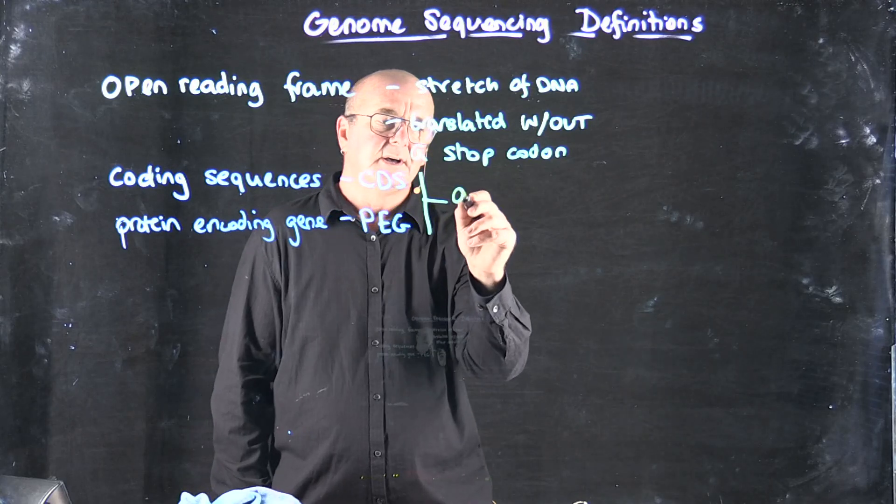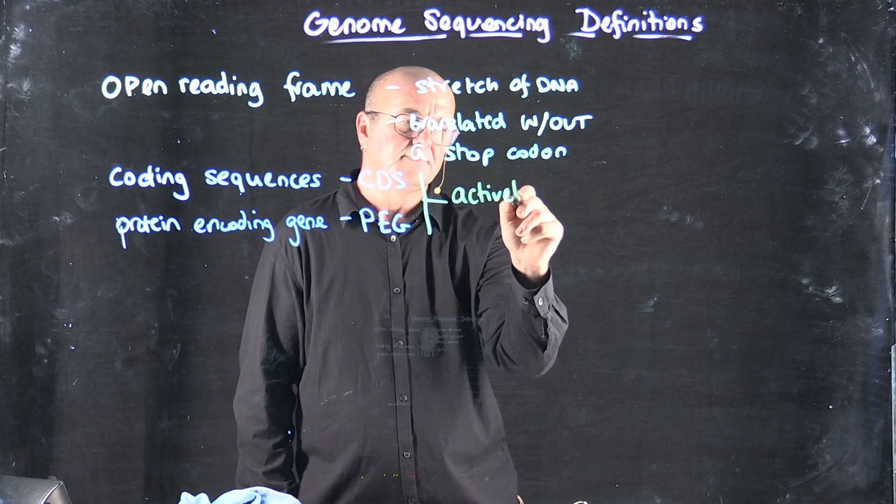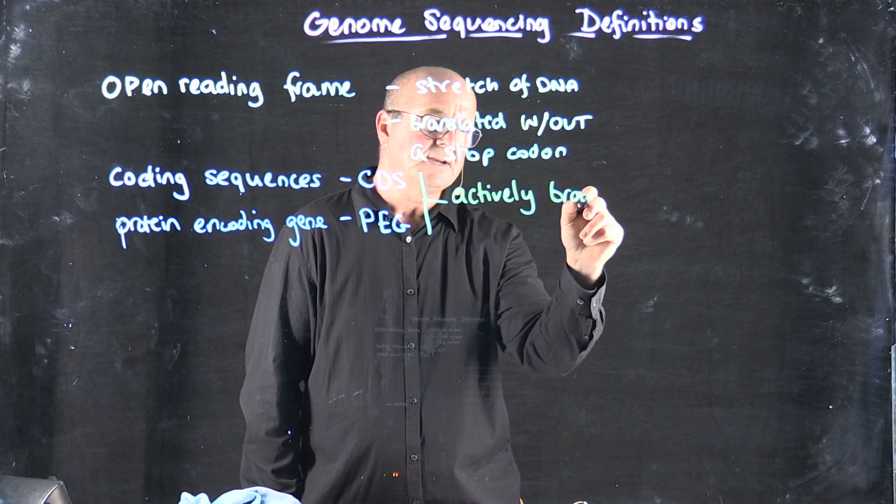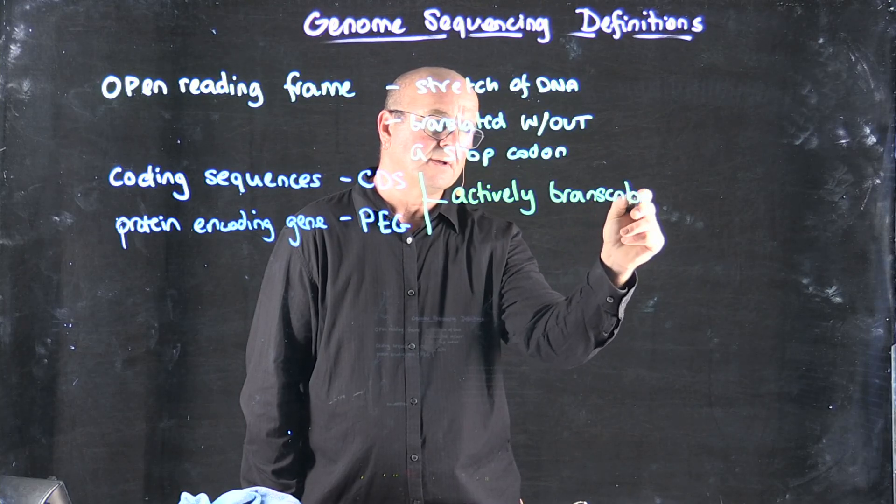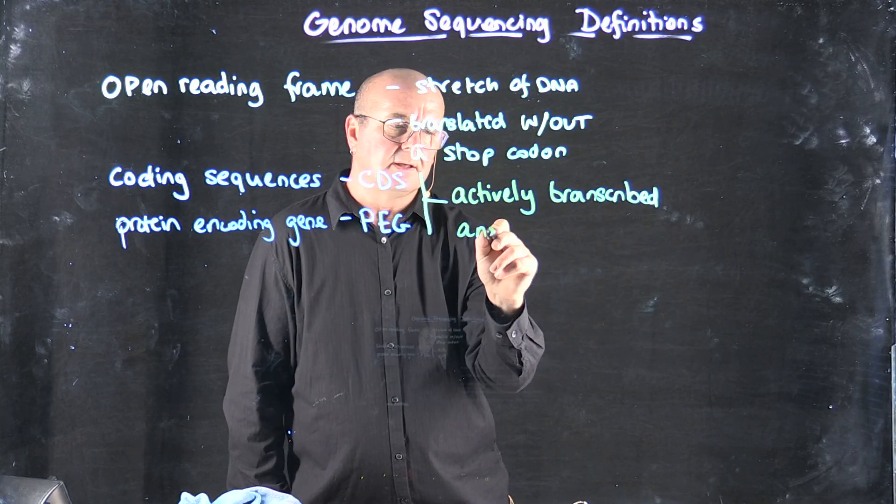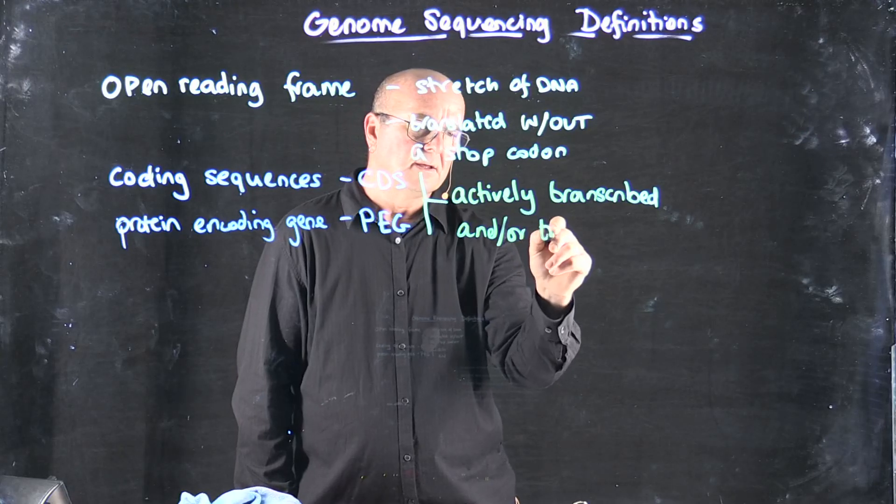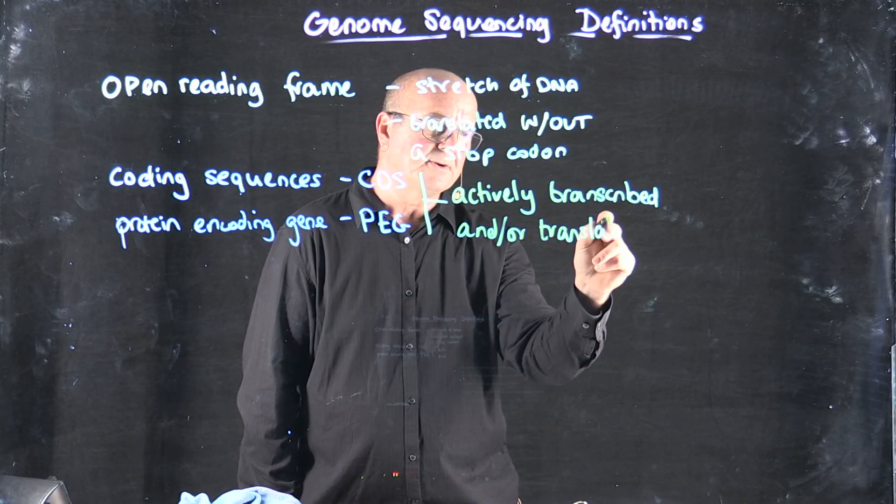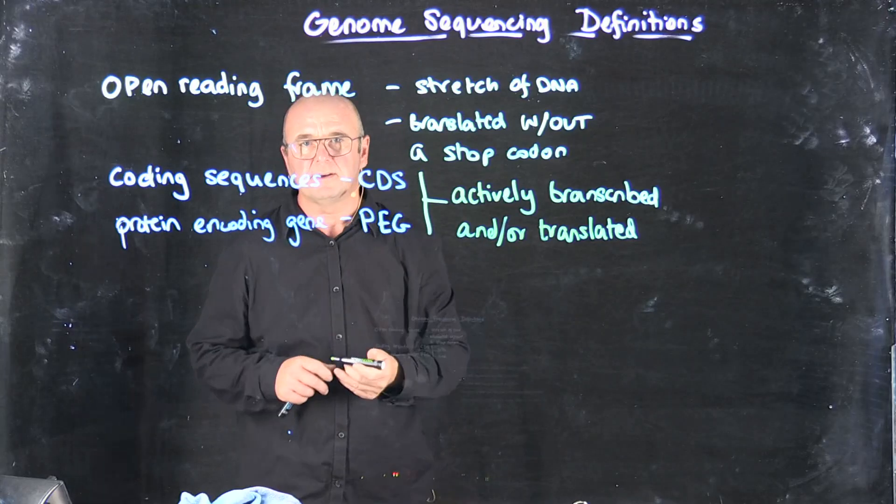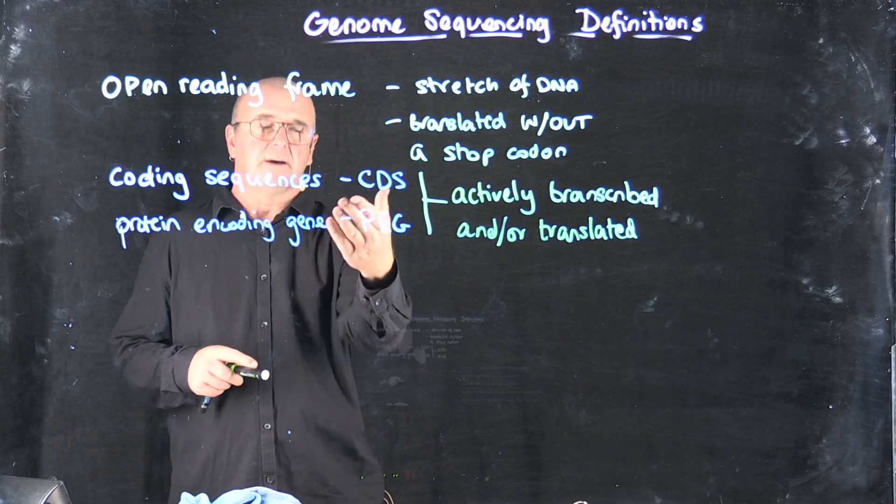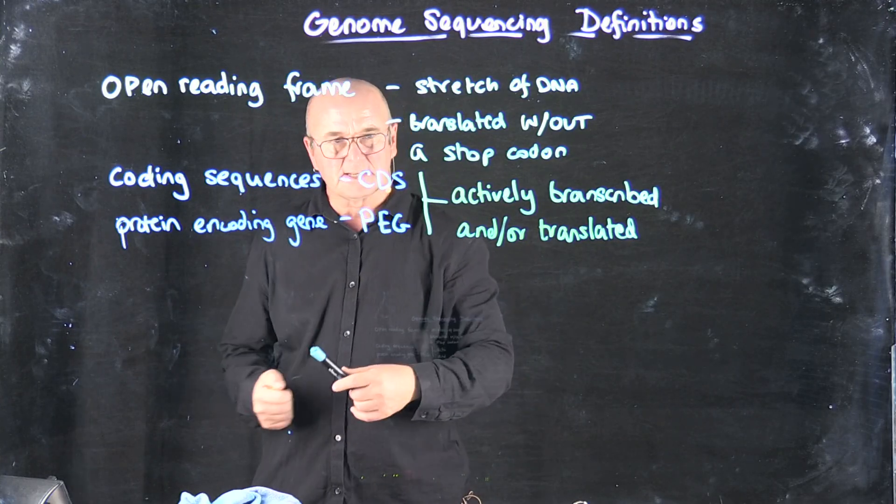And so these are regions of the genome that are actively transcribed and potentially, but not always, translated. So protein encoding genes are translated, RNAs obviously are not translated.